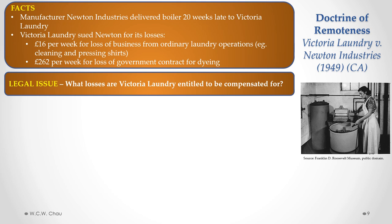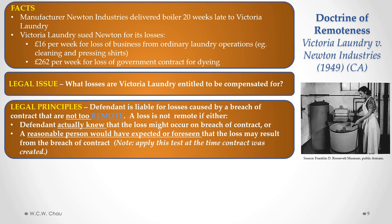The legal issue is what losses Victoria Laundry is entitled to be compensated for. The legal principles the court applied are: first, the defendant is liable for losses caused by a breach of contract that are not too remote. A loss is not too remote if either the defendant actually knew the loss might occur on breach of contract, or a reasonable person would have expected or foreseen that the loss may result from the breach of contract. This reasonable foreseeability test is applied at the time the contract was created.